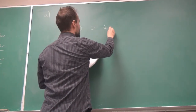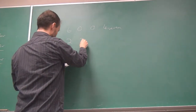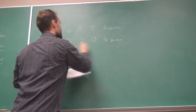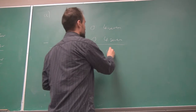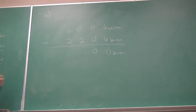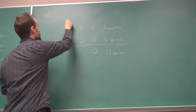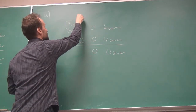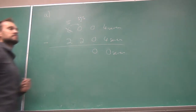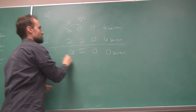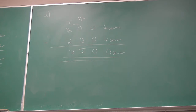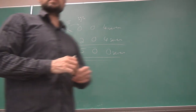Part A: 6004 base 7 minus 2204 base 7. Four minus 4 is 0. Zero minus 0 is 0. Zero minus 2 — need to borrow, but there's nothing there. Borrow from the next column: that becomes 5, and the borrowed column becomes 7. Seven minus 2 is 5. Five minus 2 is 3. The answer follows.